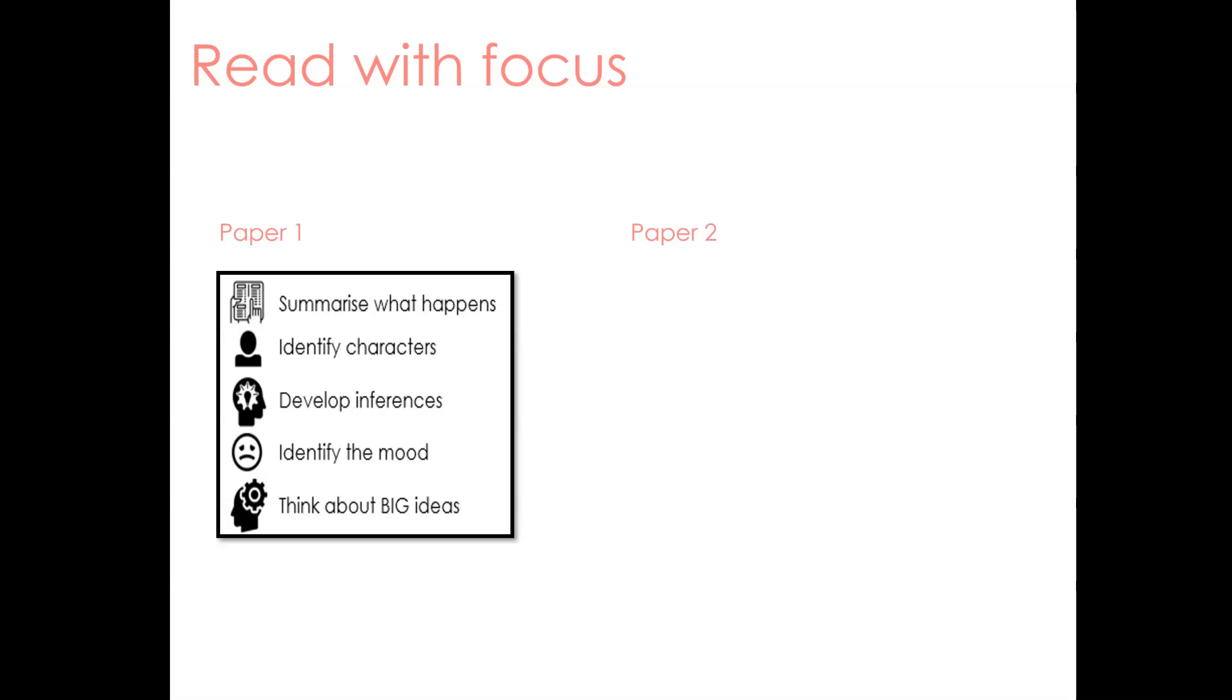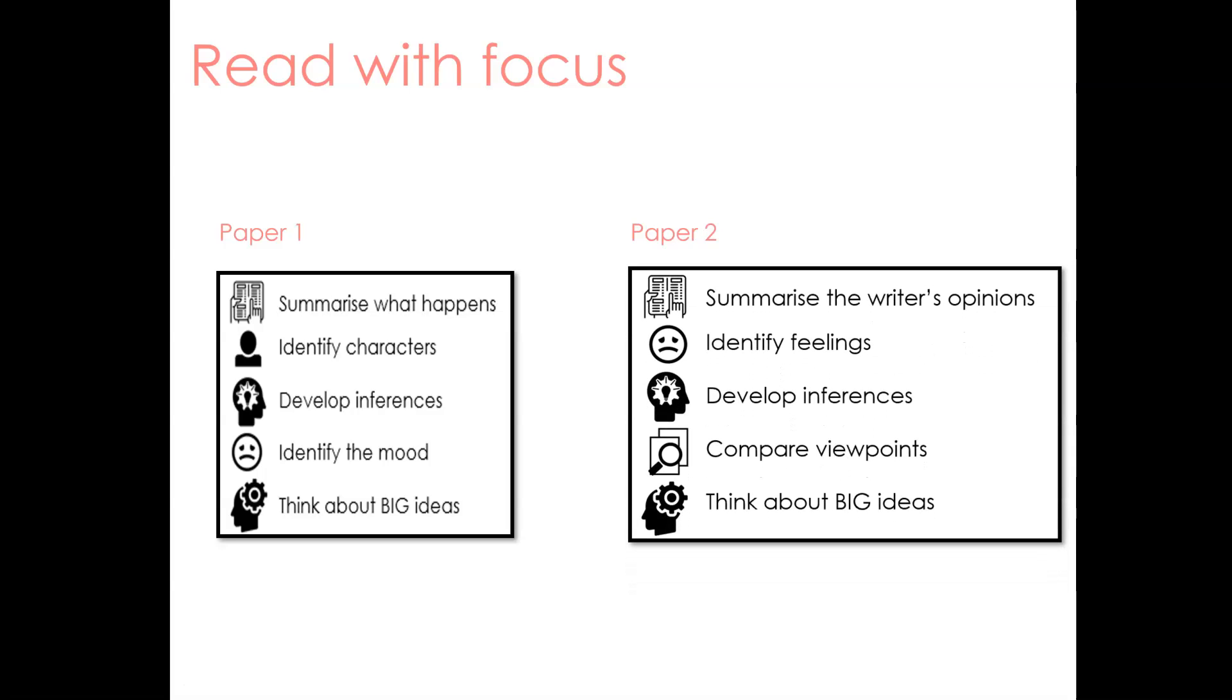Similar things are there to look for in paper two. However, we know there are two texts and they are non-fiction texts. So our focus changes slightly. We need to be able to summarize the writer's opinions this time to be able to look for and identify feelings and how they may change. We're also going to have to compare the two texts. So looking at similarities and differences between the topics presented and the writer's viewpoints will be useful. But there will be similarities. We're still wanting to infer. We're still needing to look at what the bigger ideas in the text are.